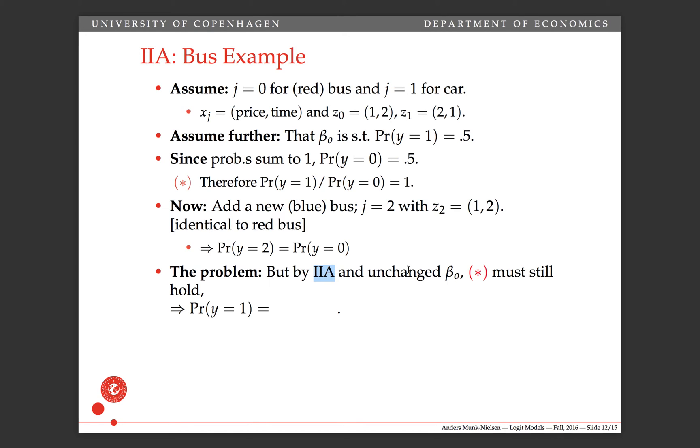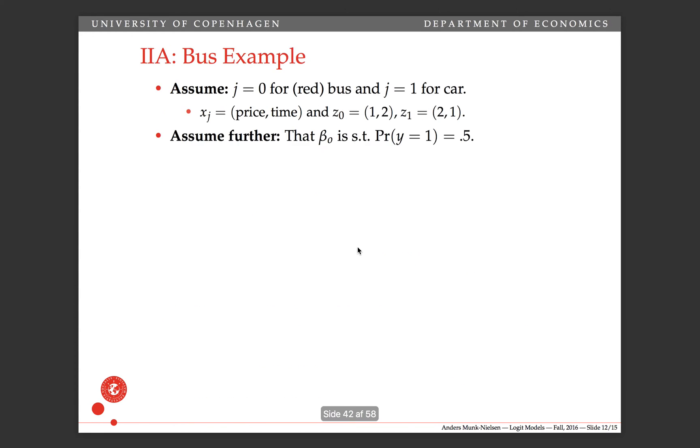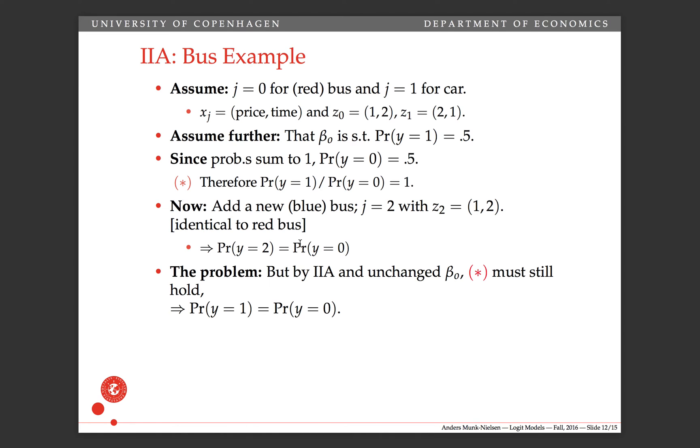But by the independence of irrelevant alternatives and by the fact that we have not changed the true parameters beta-naught, this relative probability between 1 and 0 must still hold. So that's the equation from before here. This one must still hold because it doesn't matter what this denominator is, whether there's more or less alternatives in it. It's going to cancel out when we take the relative probabilities of two alternatives. So whether we've added the blue bus or not, it must be the same. So hence, when we have the probability that y equals 1 divided by probability of y equals 0 is equal to 1, we showed that before, then we can move this thing over on the other side and we have the probability of y equals 1 is equal to probability of y equals 0.